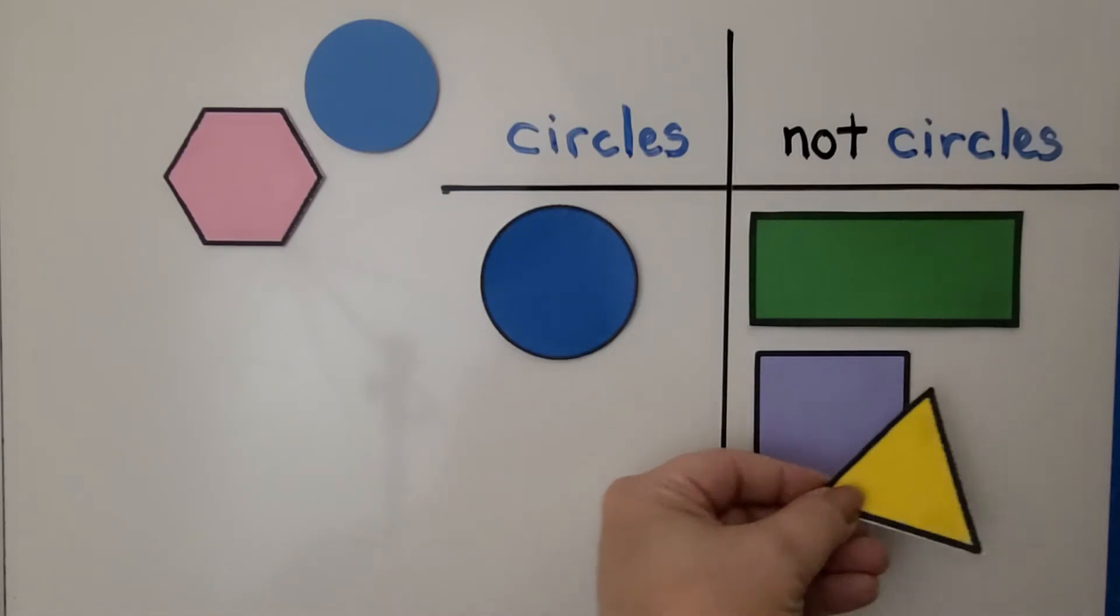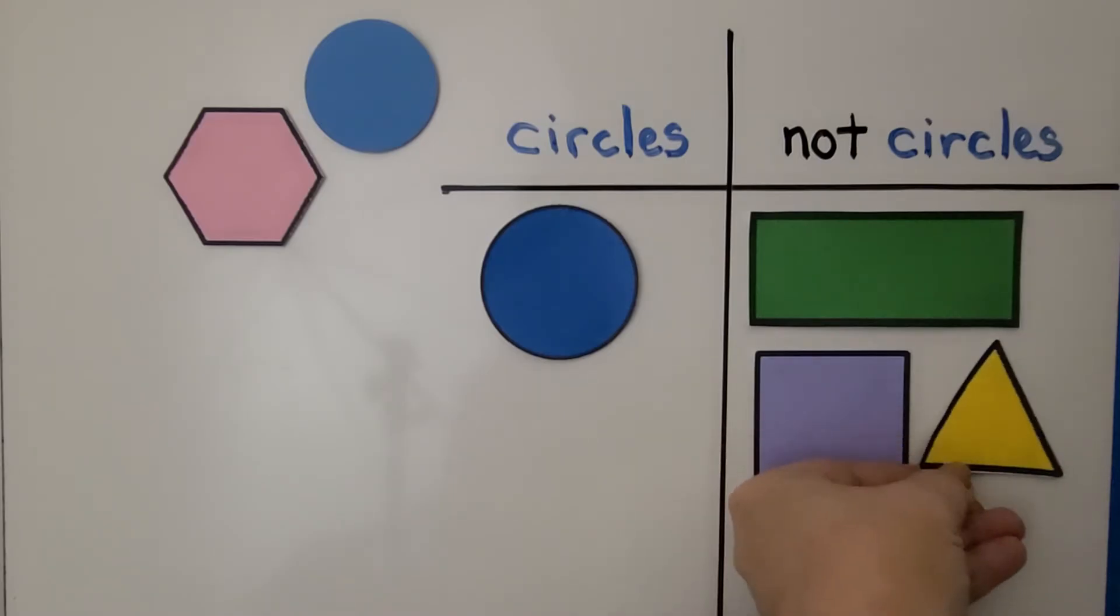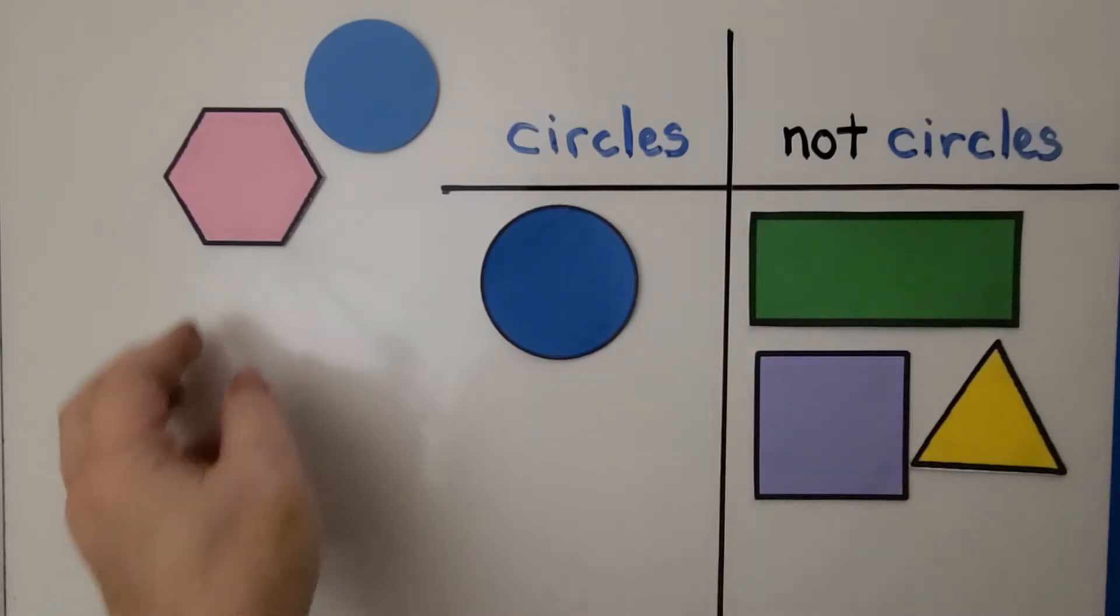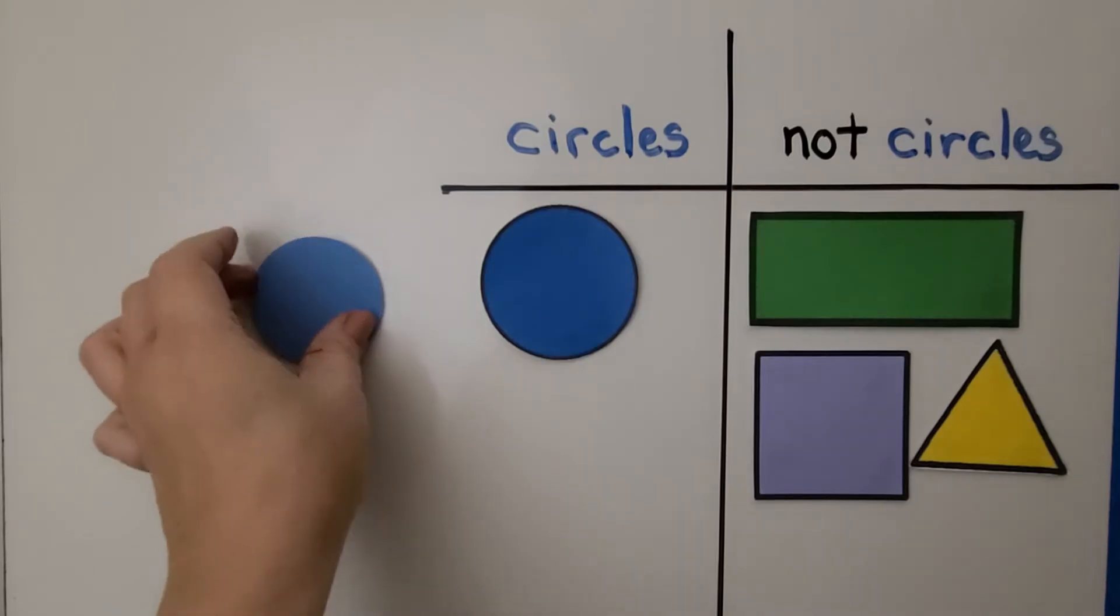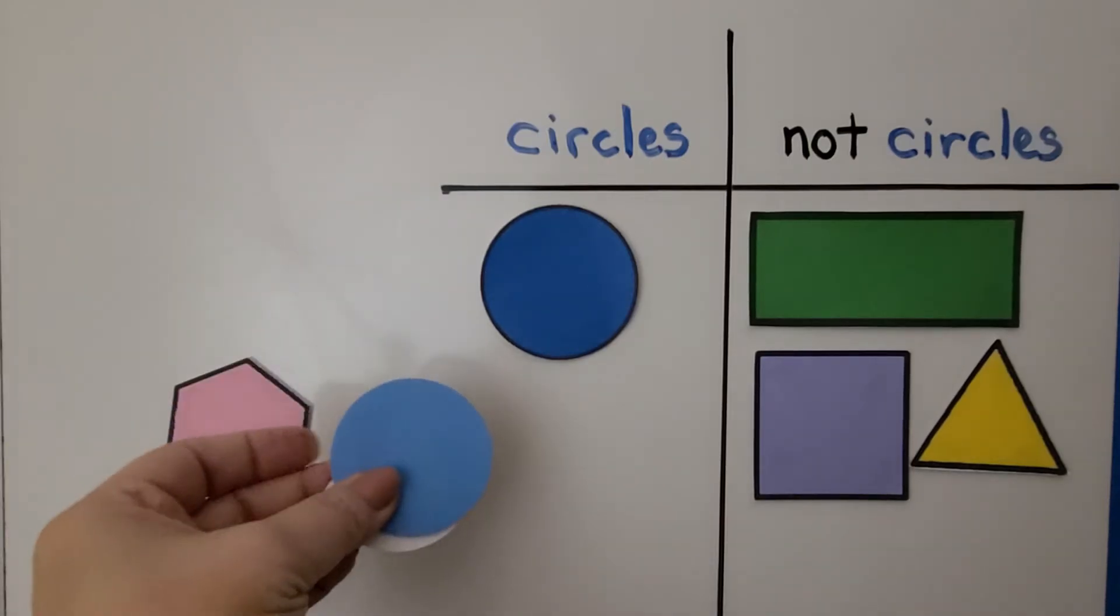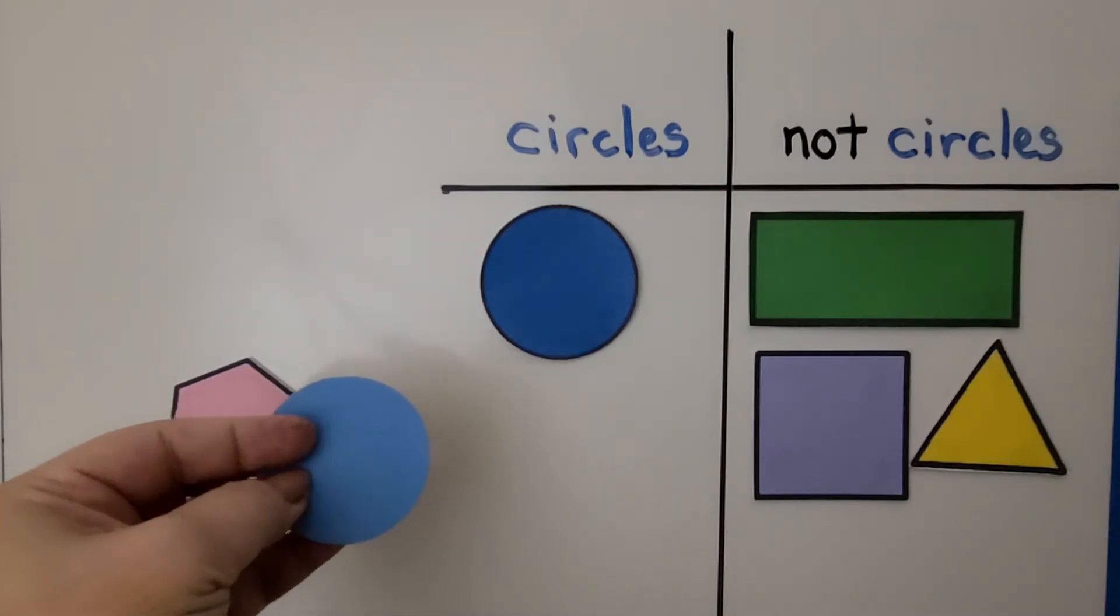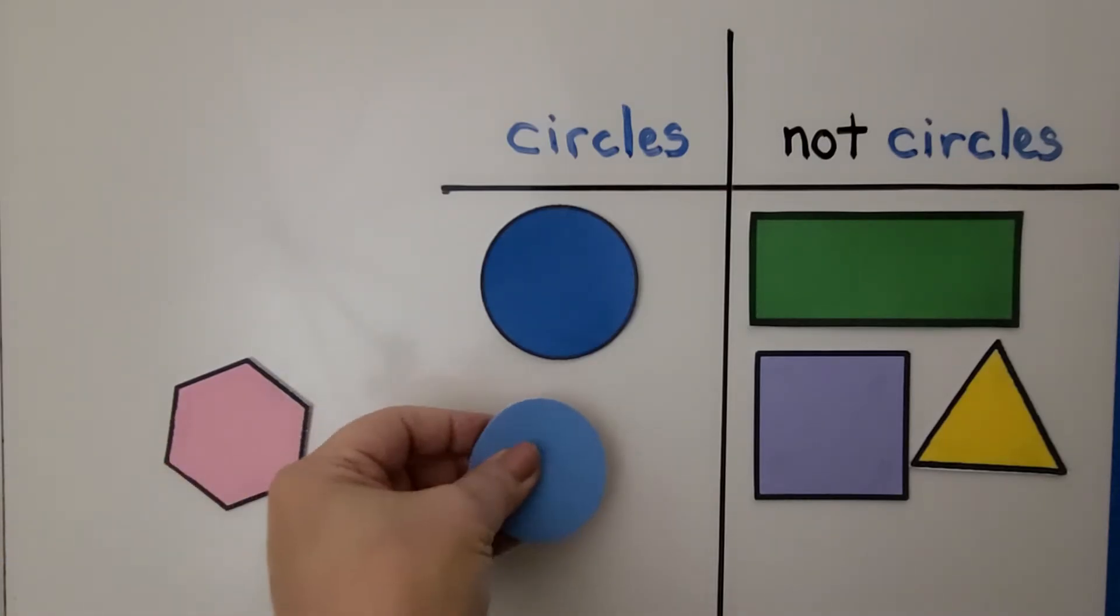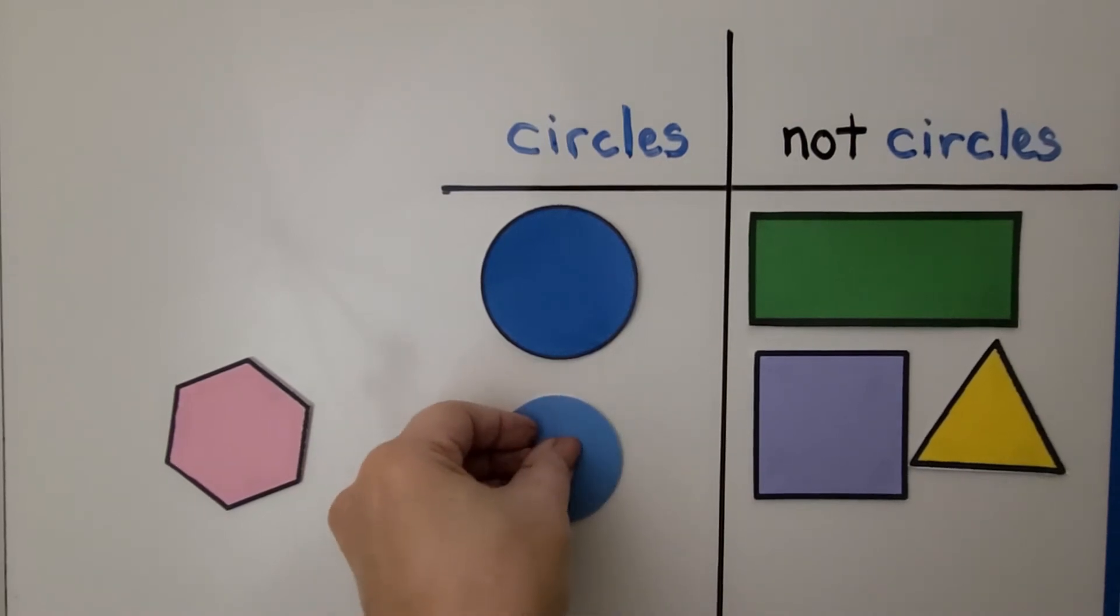If you said not circle, you were right because this is a triangle. What about this one? Is this a circle or not circle? If you said circle, you're right. It's round and flat. This is a circle.